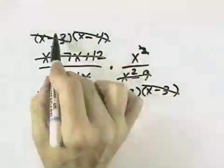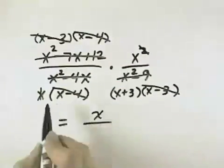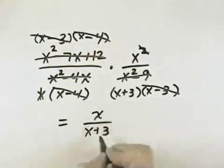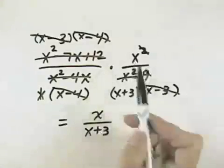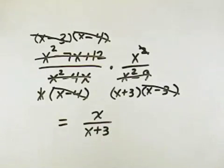So what we have left, if we look on top, is a 1, a 1, and then an x, so that's going to be an x in our numerator. And here we have a 1, a 1, and an x plus 3, and another 1. And so the remaining factors are an x in the numerator and an x plus 3 in the denominator, so that would be the simplified form of our answer.